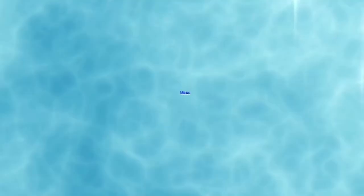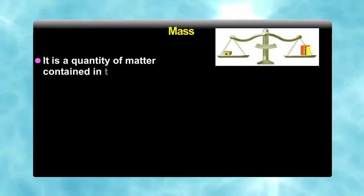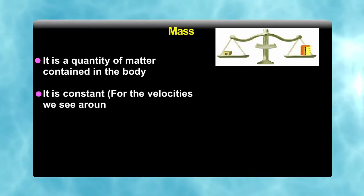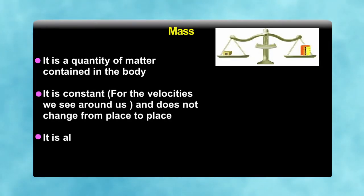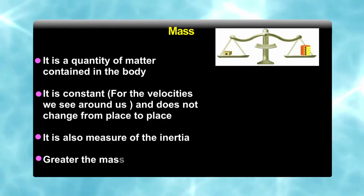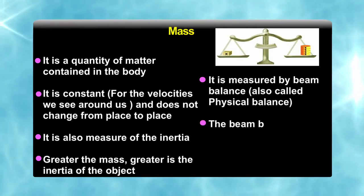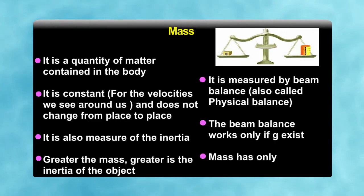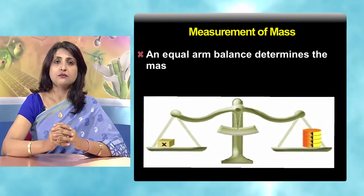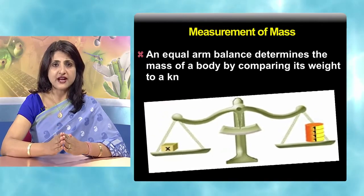Let us talk about mass. What exactly is the mass? It is a quantity of matter contained in a body. It is constant and does not change from place to place. It is also a measure of inertia. Greater the mass, greater is the inertia of the object. How do we measure mass? It is measured by beam balance also called physical balance. This beam balance works only if acceleration due to gravity exists. Mass has only magnitude. An equal arm balance determines the mass of a body by comparing its weight to a known weight.